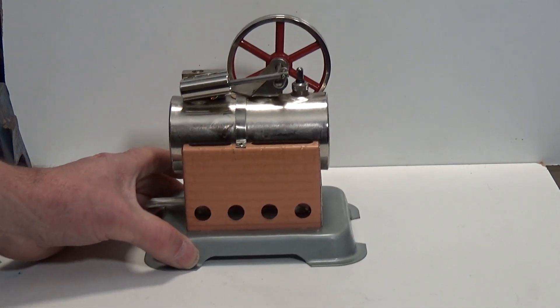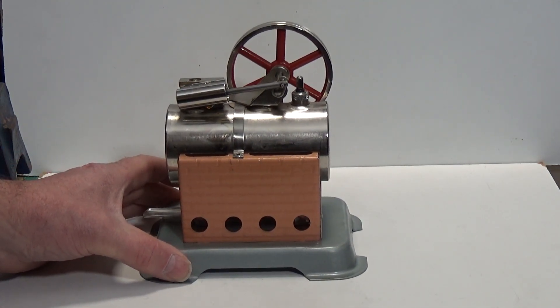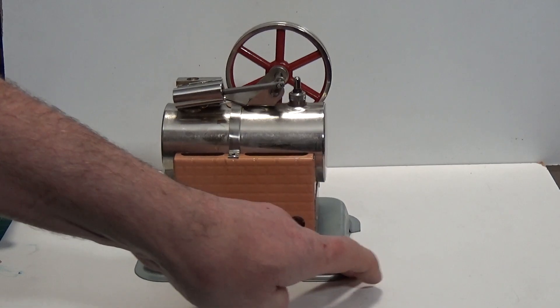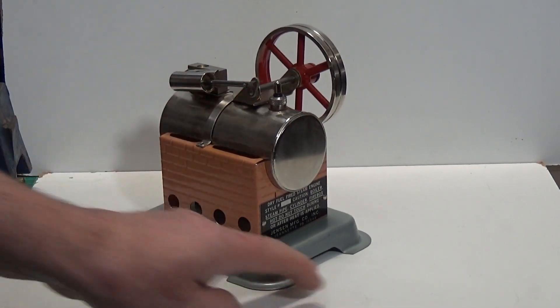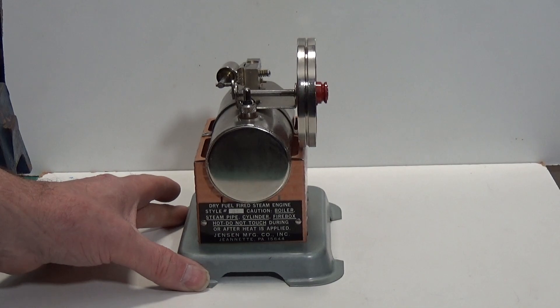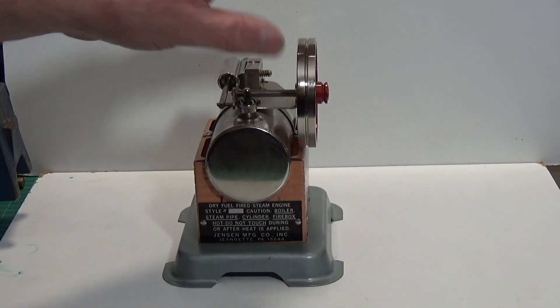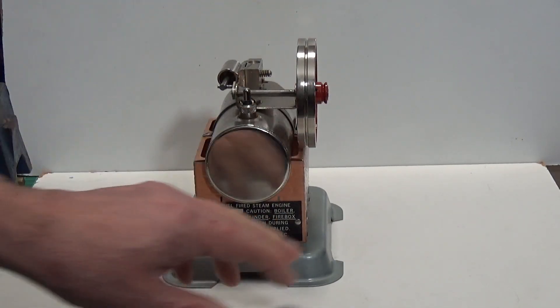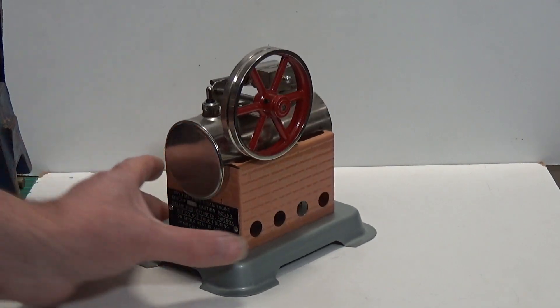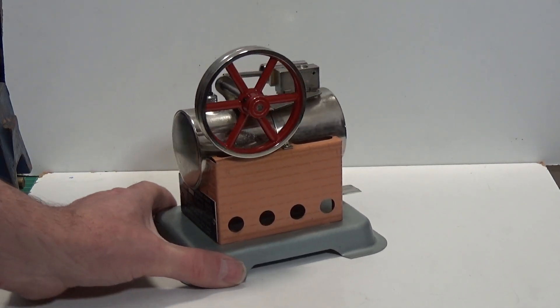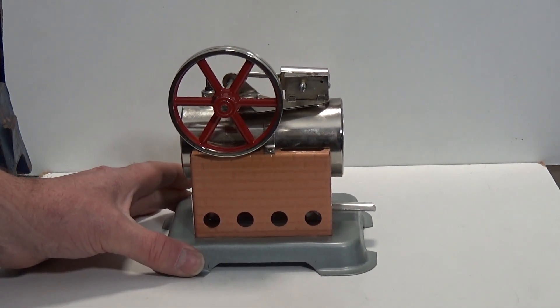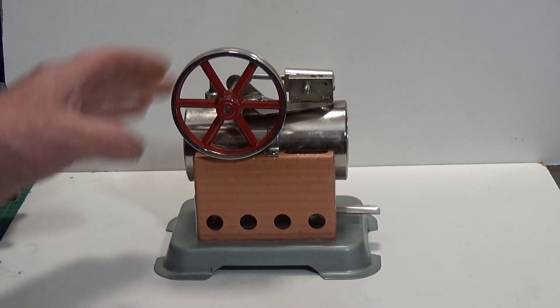As I said before, this is Jensen's smallest engine, the 85. Very basic oscillating cylinder, but you know, still very capable. You could certainly drive stuff from this, I would imagine, you know, put some tools and so forth on it.